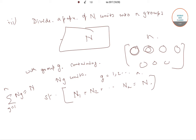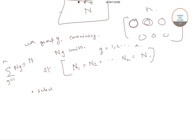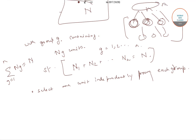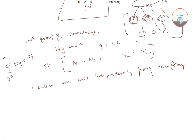We select 1 unit independently from each group. Since there are n groups and we are selecting 1 unit from each group, the overall number of units selected would be n. This will give a total of n units selected in a sample with probability proportional to size without replacement.